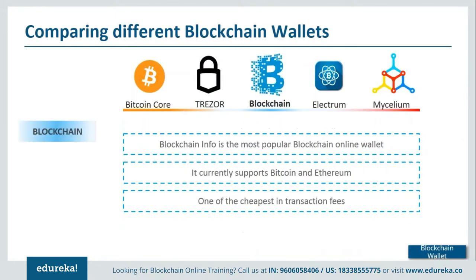Blockchain.info wallet is one of the most popular online wallets with close to eight million users. It supports both Bitcoin and Ethereum, and allows you to convert between them. It also offers one of the cheapest transaction fees — for example, sending about 2,500 rupees during a non-peak hour costs around four rupees in fees, and even a priority transaction only costs about 41 rupees, which is very small compared to other transaction methods.